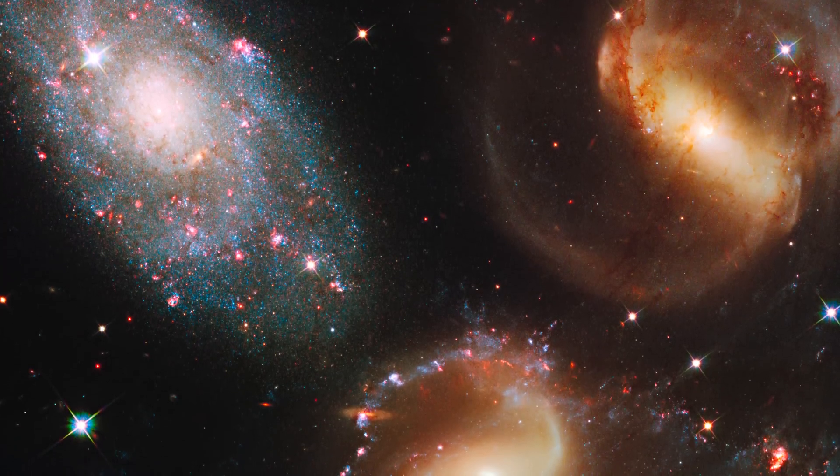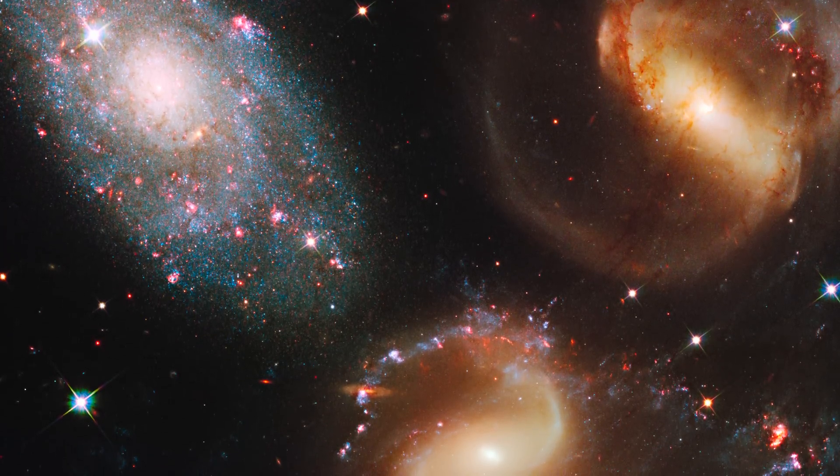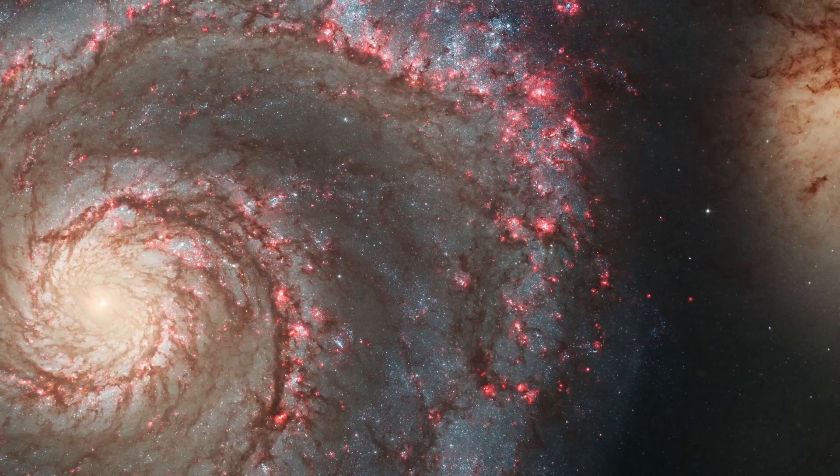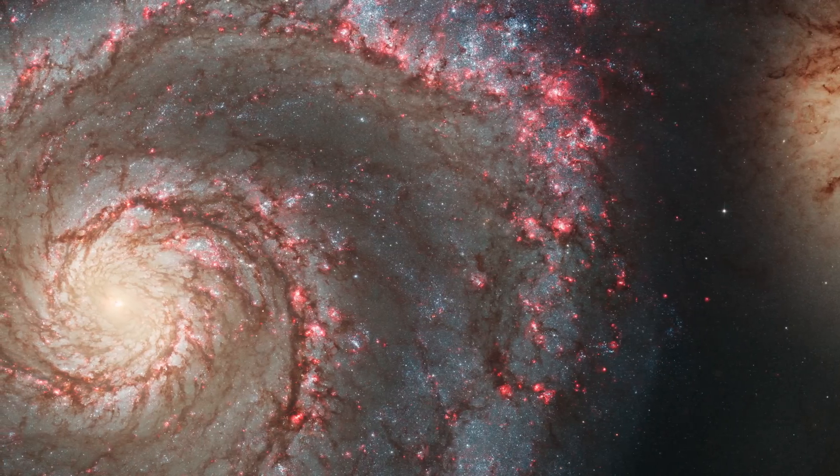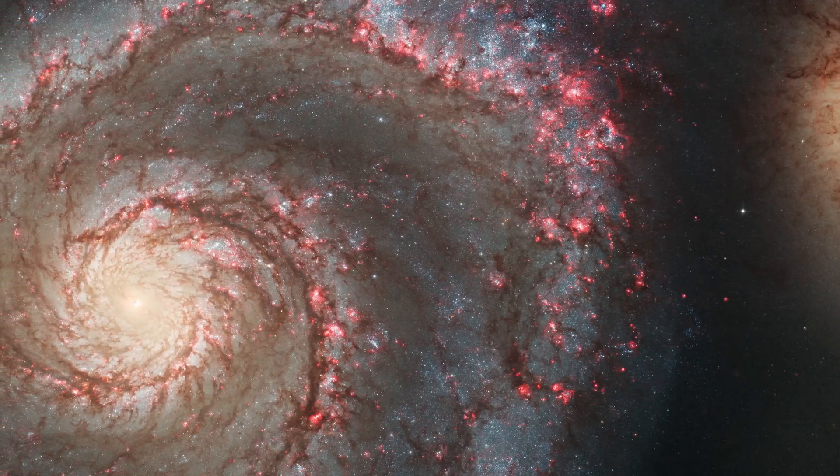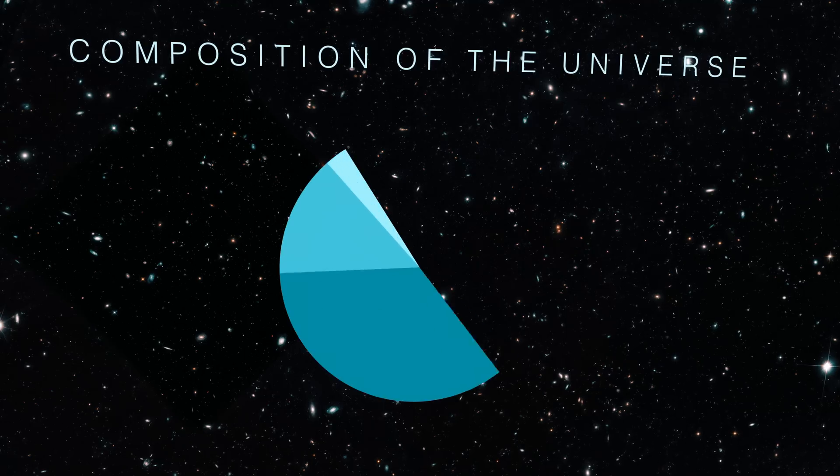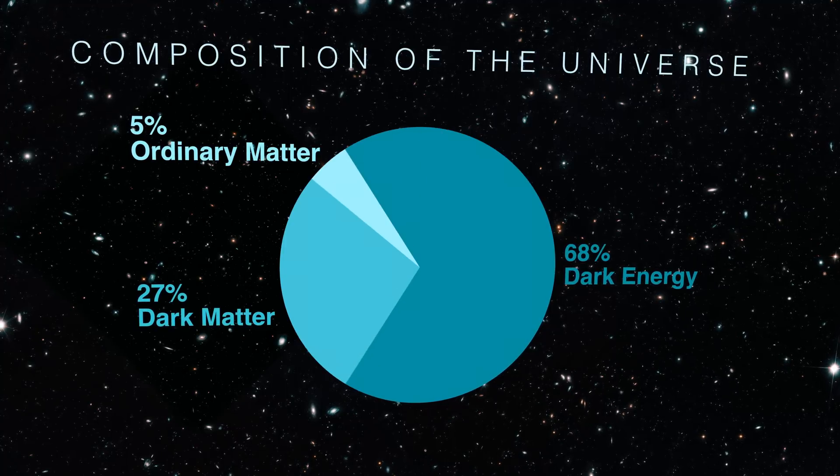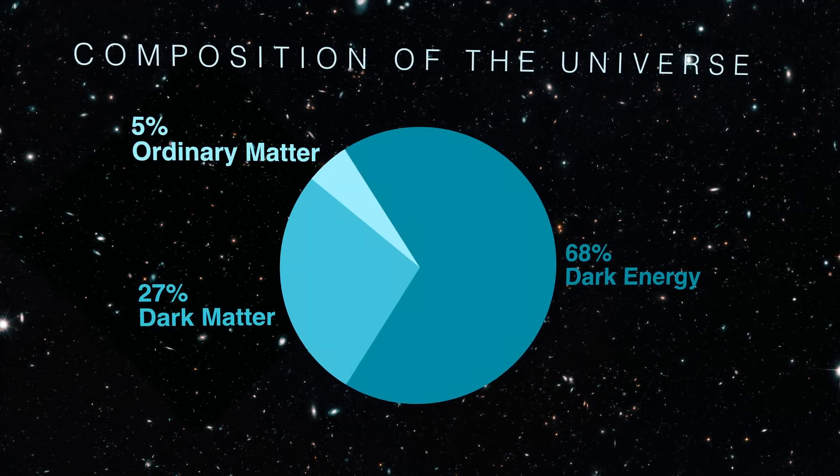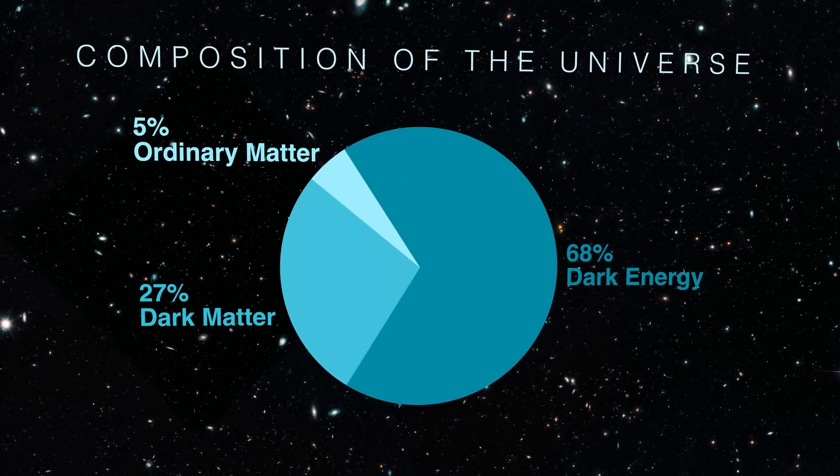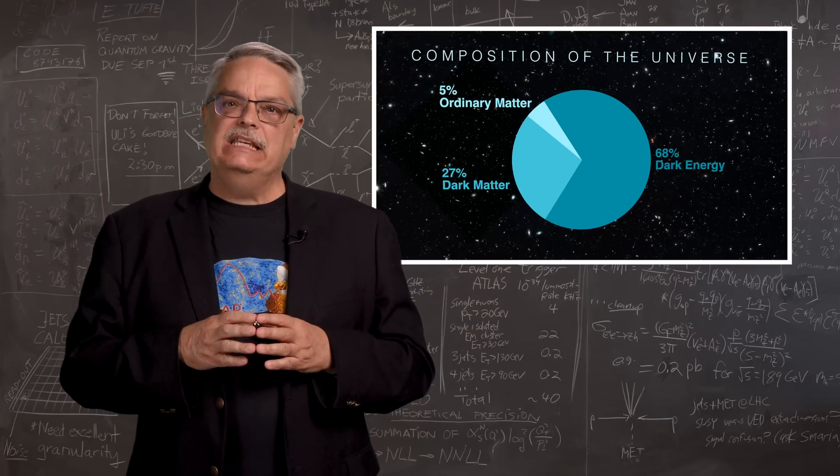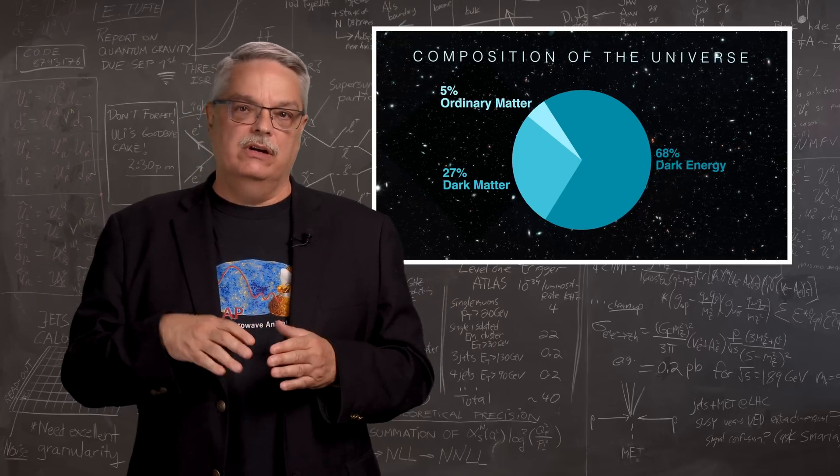Astronomers don't believe that they have overlooked anything in the usual physics theories. If they did, then they wouldn't be able to explain things like the distributions of galaxies in the universe. But it's important to remember that ordinary matter only makes up 5% of the matter and energy in the universe. The remaining 95% is made of dark matter and dark energy.